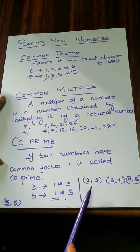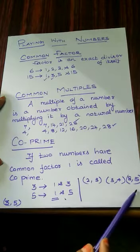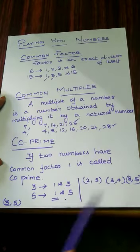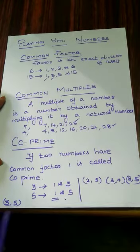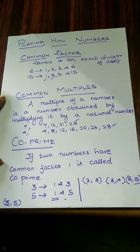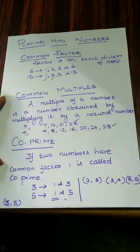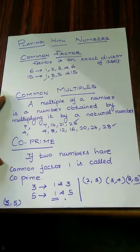Some more examples of co-prime pairs: 2 and 3, 3 and 4, 8 and 15. The first pair, 2 and 3, can also be called twin primes. Two consecutive odd prime numbers are known as twin primes — the difference between the two numbers is 2.